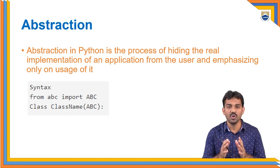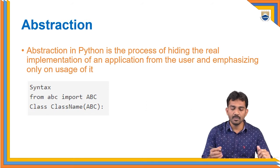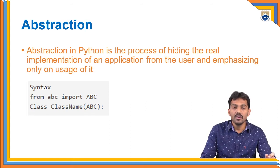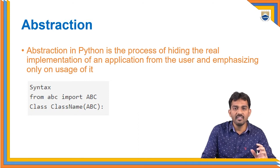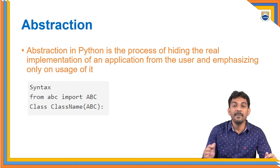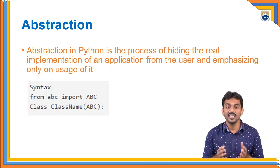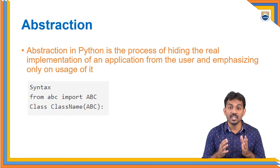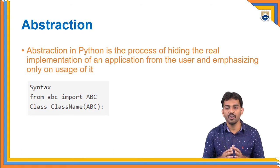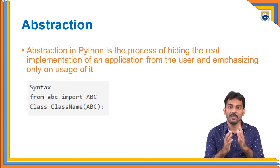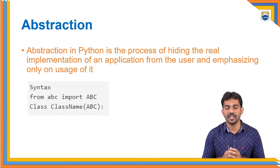Abstraction helps you to hide the real-time implementation — the parts you don't need to know. For example, even if you consider a two-wheeler, if you press the brake, the vehicle will stop. But you don't know what the process is behind the braking system, and that is not required for you. In the same way, in software, there's no need to know everything. If you want to hide the implementation from the client, you just apply abstraction.